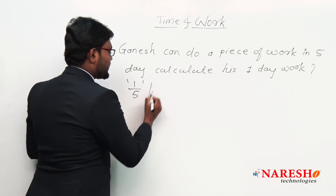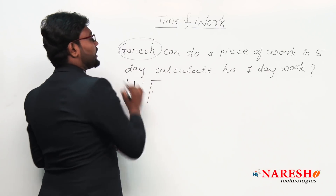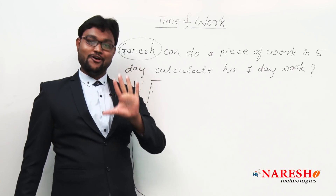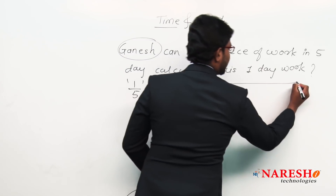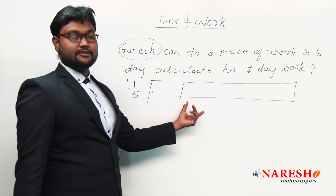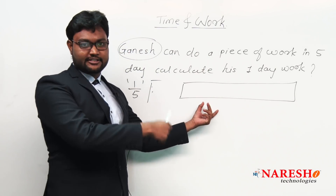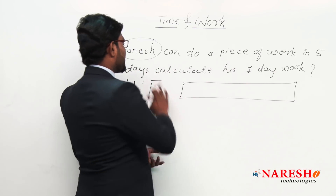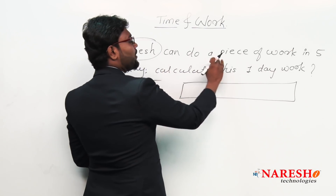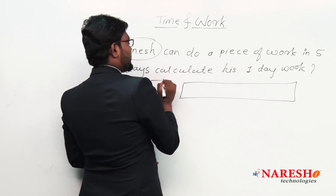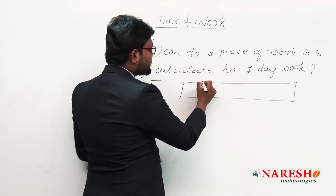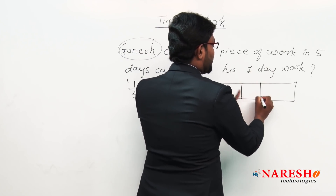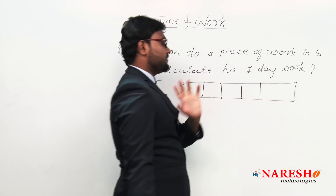Let me explain. Ganesh is a person completing a piece of work. Suppose Ganesh is painting a wall — this is the wall — and he takes five days to complete it. On the first day he completes this part, second day this part, third day this part, fourth day this part, and on the fifth day the last part.